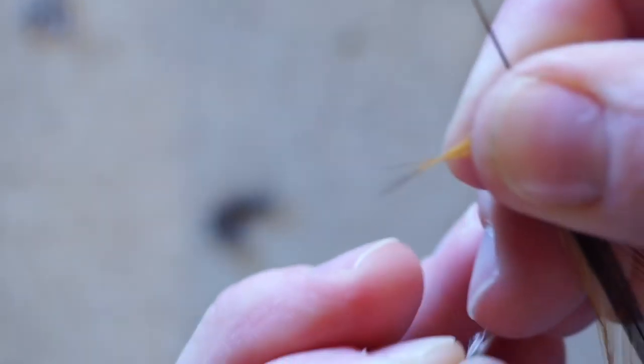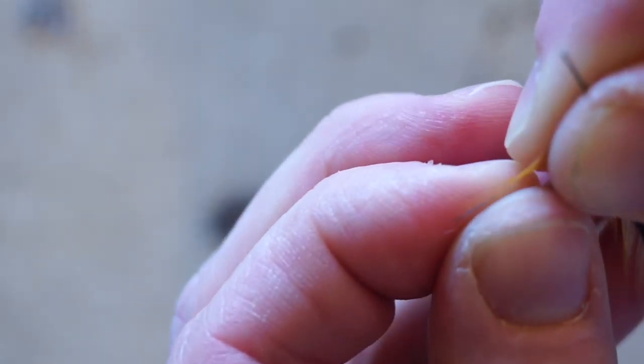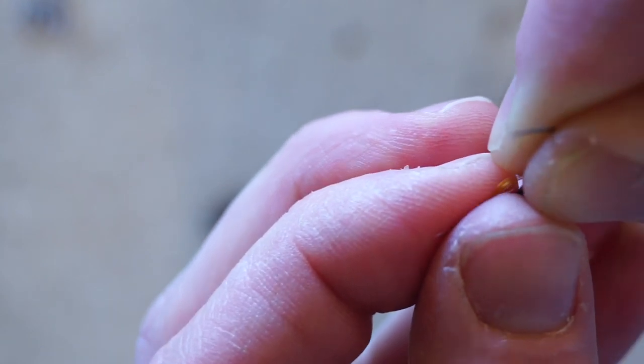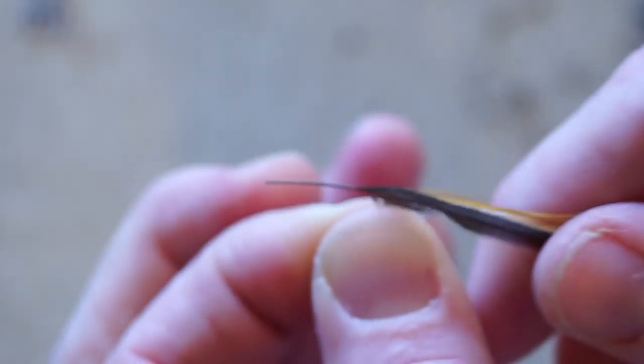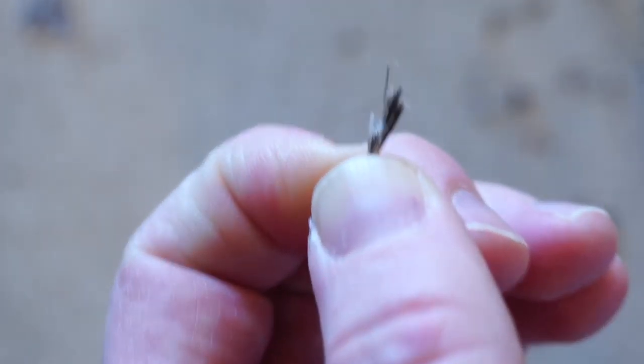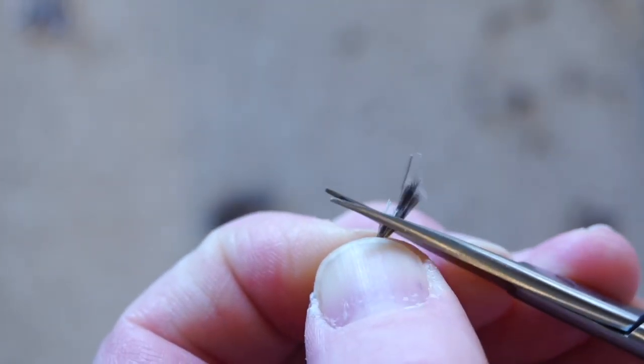Then take the brown feather and align the tips. Then you can actually place them right on your fingers where the tips will align with the grizzly tips. Then pull them off in the same way. Now just trim the ends square since the fibers are different sizes, and you're ready to tie the tail in.